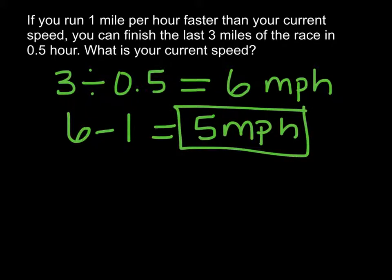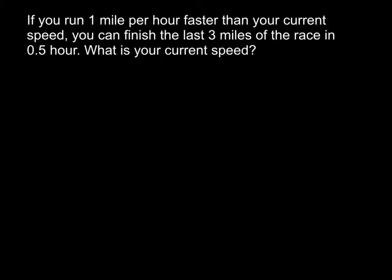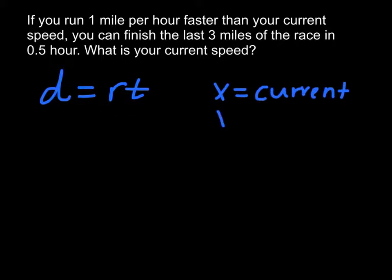Now let's solve this using algebra. We begin solving algebraically by writing down the formula for distance, which equals rate times time. We know our distance and we know our time, but we don't yet know our rate. If x equals our current speed, then x plus 1 will equal our new speed. So let's begin by inserting the information we know. We know that our distance is 3 miles, and if we run it at a rate of x plus 1, we'll finish in a time of 0.5 hours.